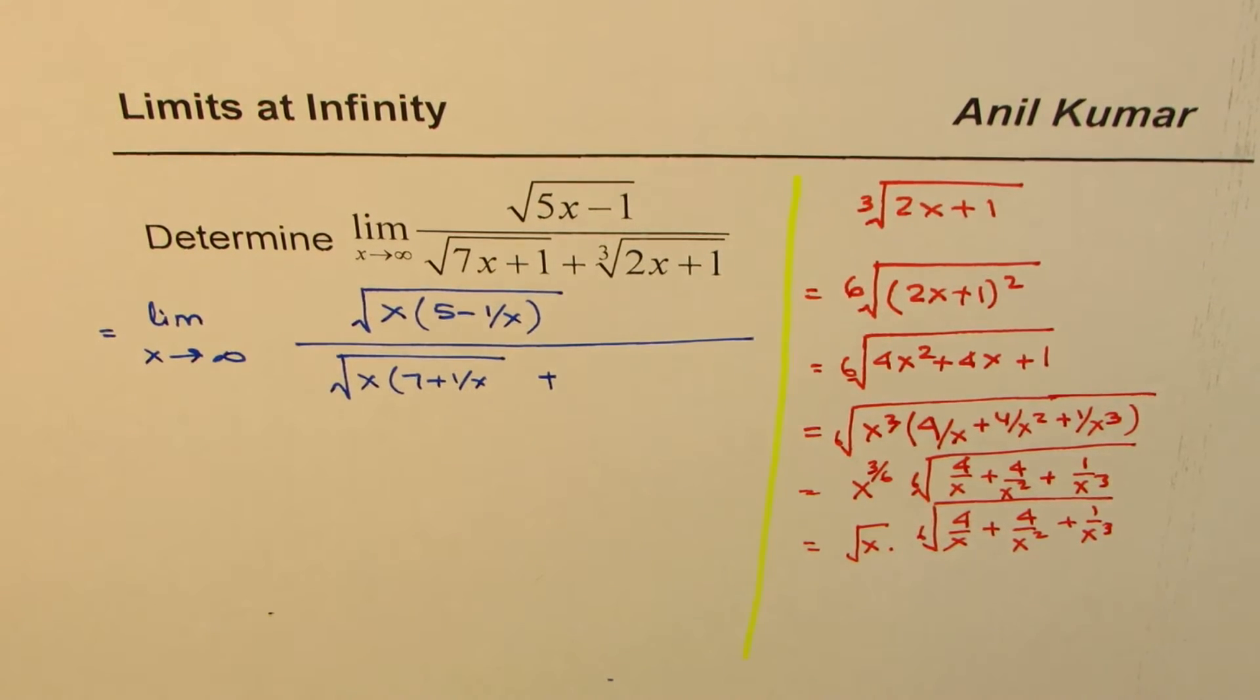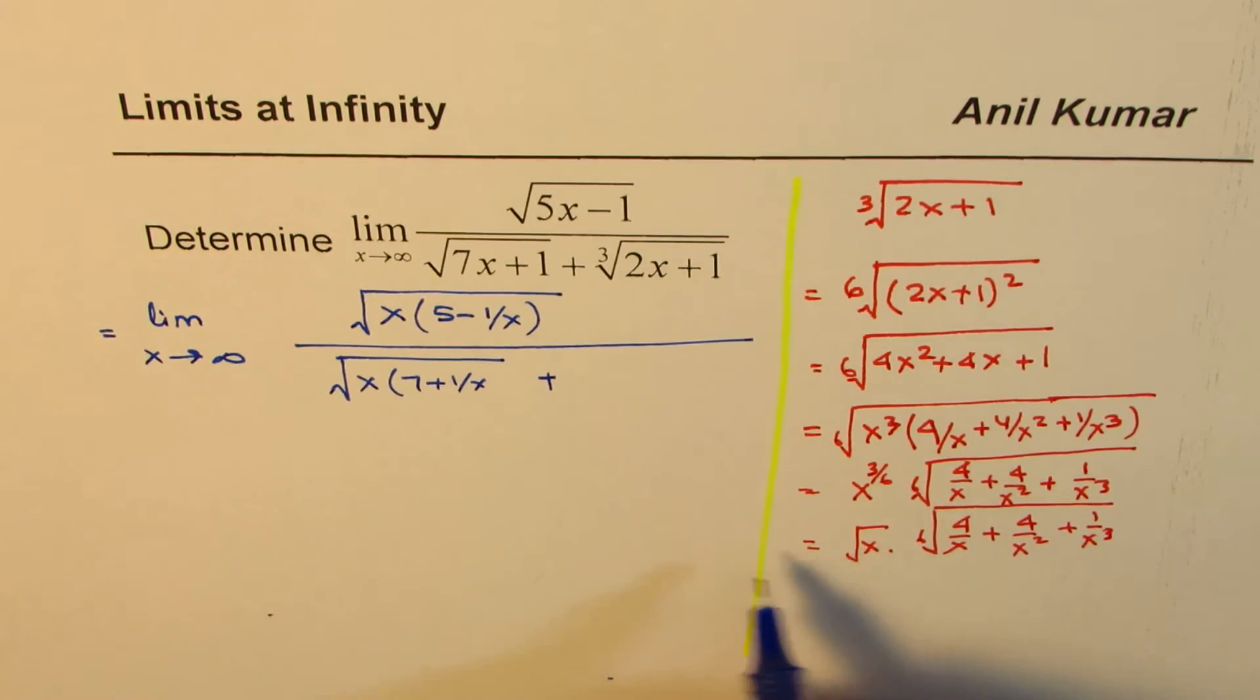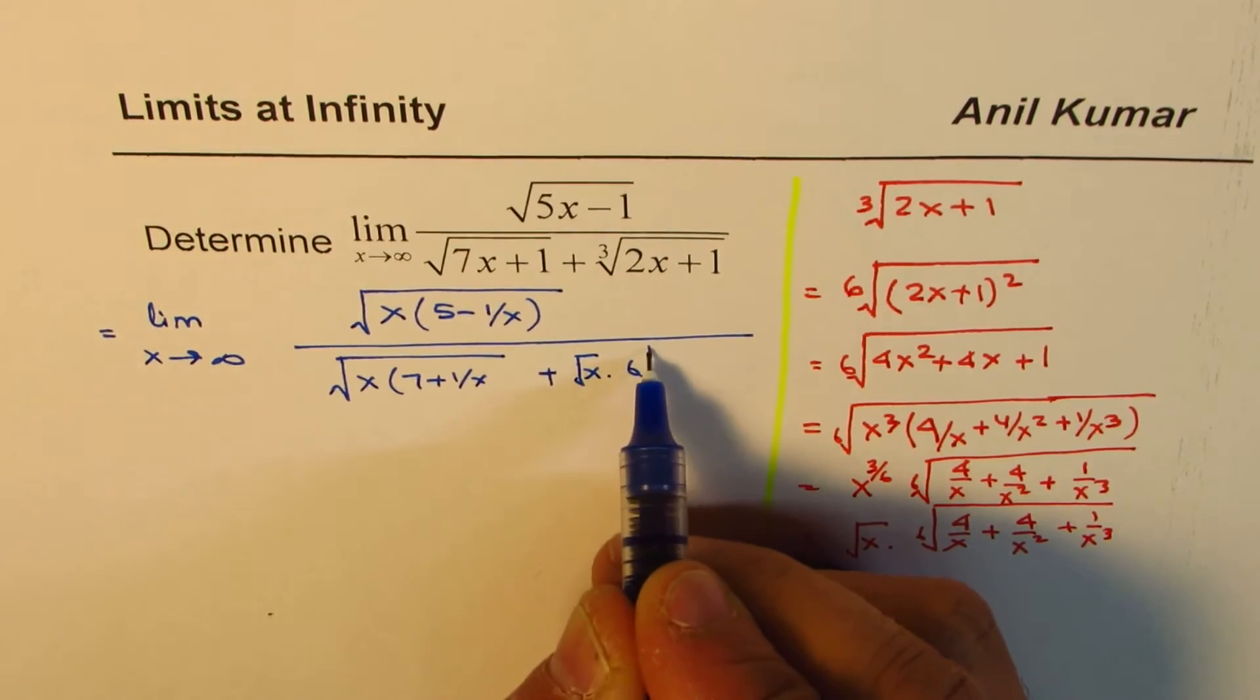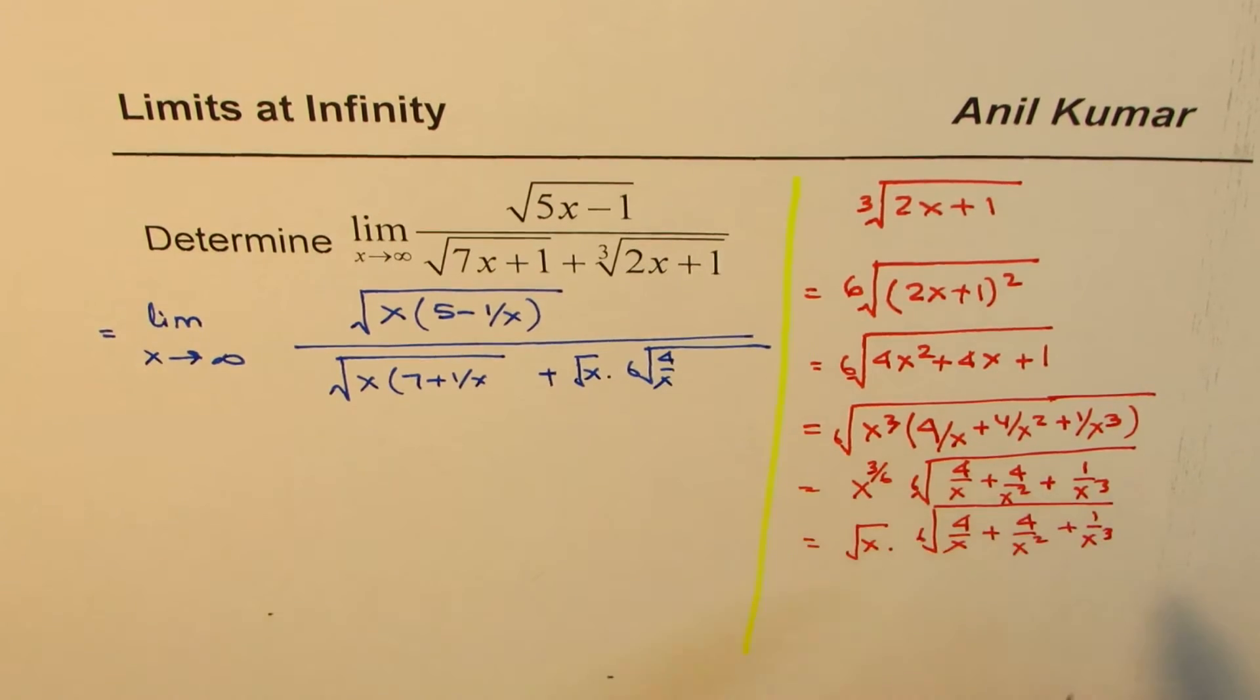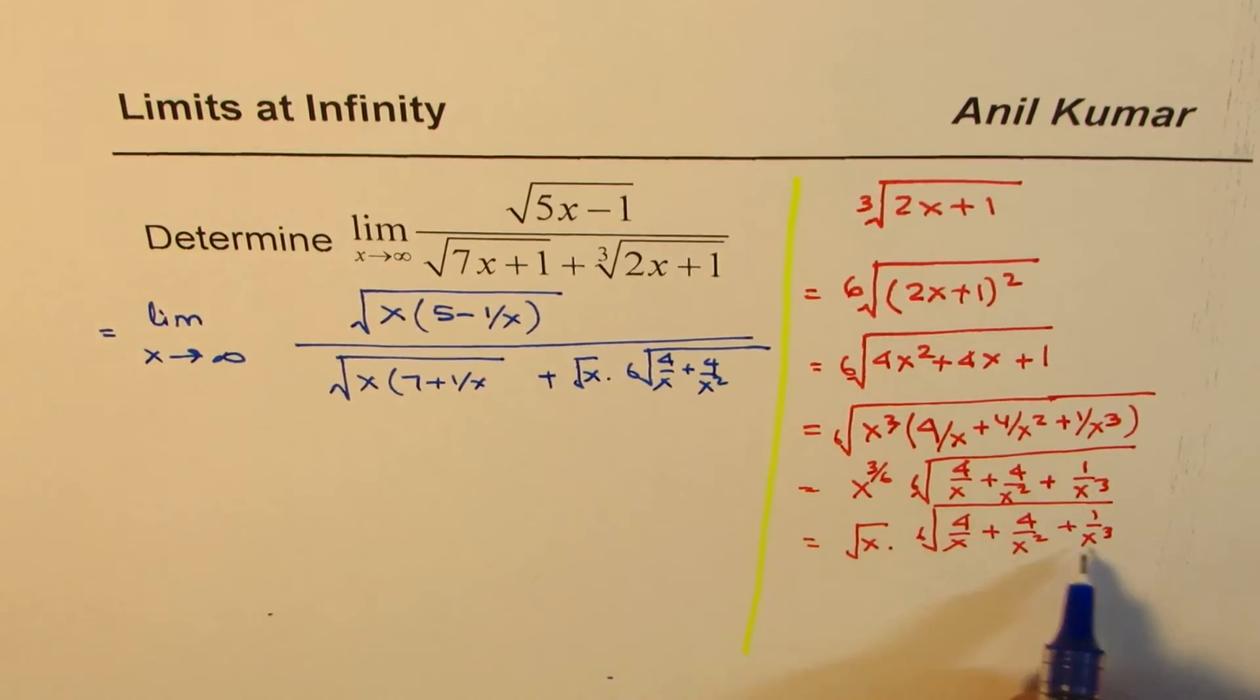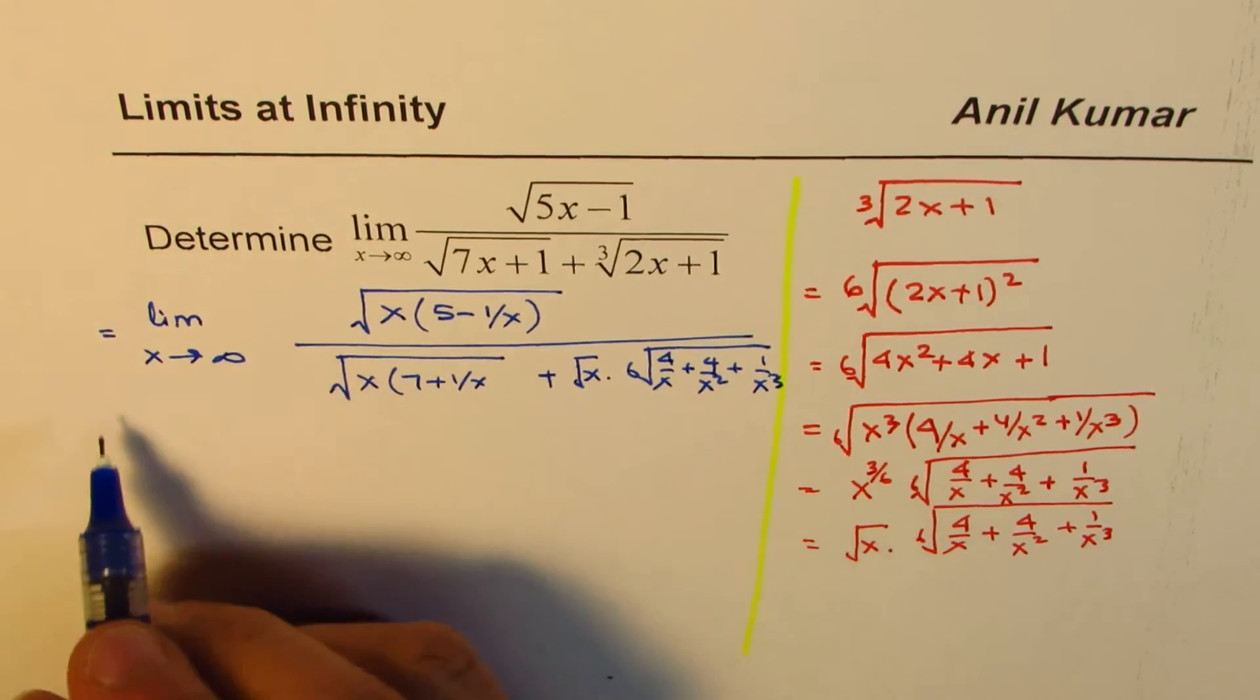So looking into this, we can actually take square root x common. Square root x common. And we could write this as sixth root of all this. So 4 over x plus 4 over x square plus 1 over x cube. Do you see that? Now let's continue.